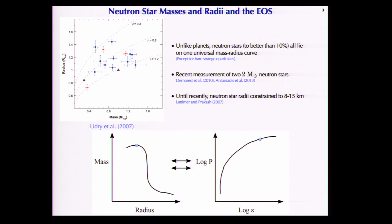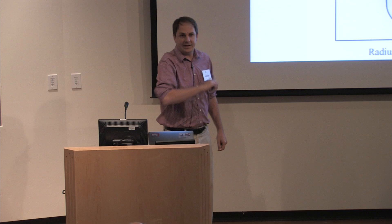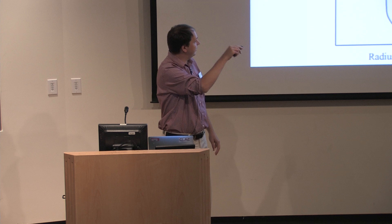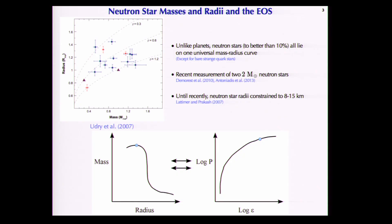If you have observations of neutron star masses and radii, they look like little dots, you connect the dots, get the mass-radius curve, do the calculation, get the equation of state, and you've learned something about QCD. We've had some exciting recent measurements of two-solar-mass neutron stars — those are effectively horizontal line constraints, meaning the curve has to go high enough, and that already tells you something about QCD. Neutron star radii are a little difficult; as of 2007 they lay between about 8 and 15 kilometers, but we can now constrain that better.